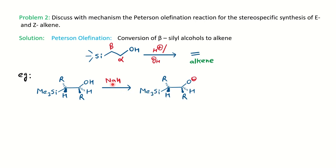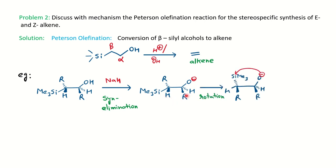First, the role of base is abstraction of an acidic proton — it abstracts the proton from the alcohol, giving a carbanion on the oxygen. Now the leaving groups are trialkylsilyl and oxygen. The condition in the presence of base requires syn-elimination, so we have to bring the trialkylsilyl group to the same plane as the oxygen. We rotate the carbon so that SiMe3 comes to the same plane. With 60-degree rotation, SiMe3 goes to the R position, R comes to the hydrogen position, and hydrogen goes to the trialkylsilyl position. Now in this structure, the two leaving groups are in the same plane. Since silicon is electropositive and oxygen is electronegative, a bond forms between them, producing a four-membered ring intermediate — it looks like a Wittig intermediate. Whatever stereochemistry is present in this ring, the same stereochemistry you will get in the product.